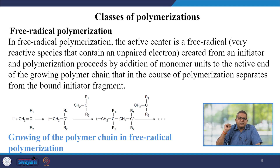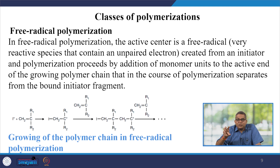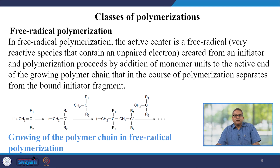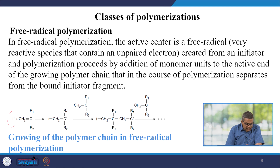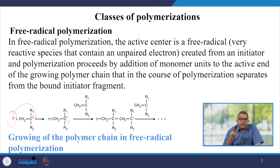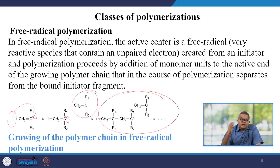In free radical polymerization, the active center is the free radical, which is a very reactive species containing an unpaired electron that always seeks to form a pairing. This can be created from an initiator, and the polymerization process proceeds by addition of monomer units to the active end of the growing polymer chain. Here you see that this is the initiator, by which this free radical is shifted and can become a functional site for further polymerization, forming the growing chain of polymer.